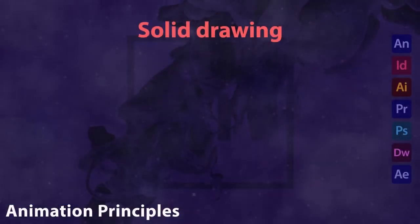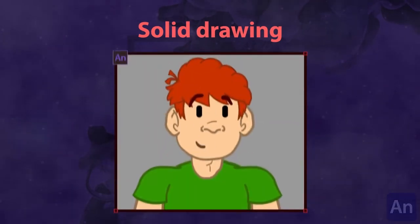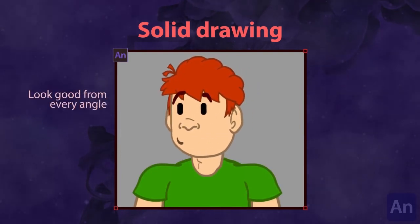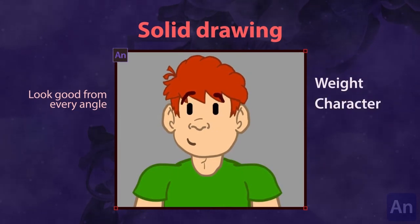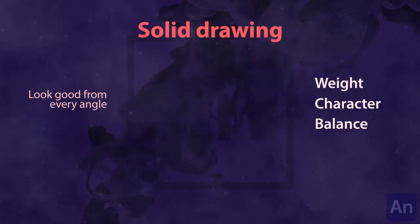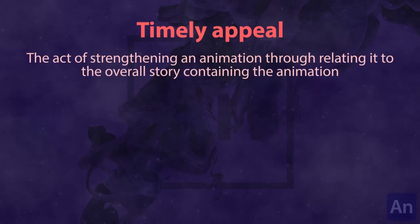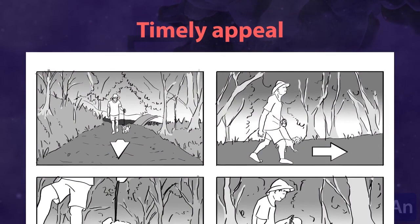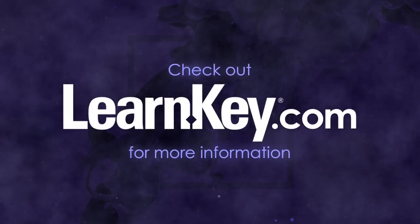Solid drawing is listed as an animation concept, even though it is more of a drawing concept. It is the idea of making a character or object look good from every angle — think of a 3D object in 2D space, giving it weight, character, and balance to make it look more realistic, even if it is cartoony. The last animation concept is timely appeal — the act of strengthening an animation through relating it to the overall story. The better the storyboard you create, the easier it will be to find these items to add and configure later.